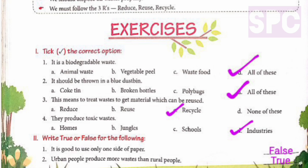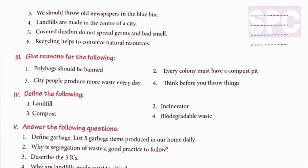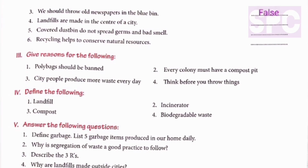Part two - Urban people produce more waste than rural people. This is a true statement. Urban people eat a lot of packaged materials packed in plastic wrappers and containers, which do not decompose easily, generating a lot of plastic waste. Part three - We should throw old newspapers in the blue bin. This is a false statement. Newspapers are biodegradable materials and should be thrown in green bins.